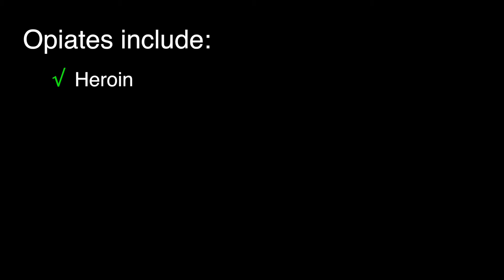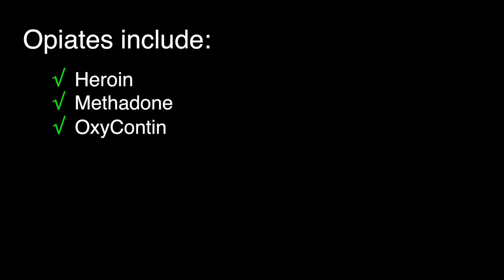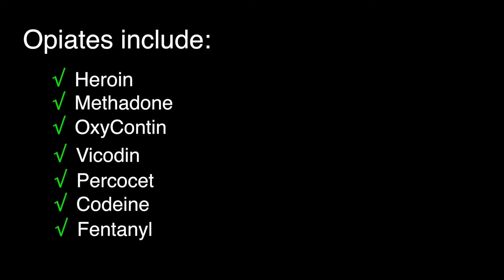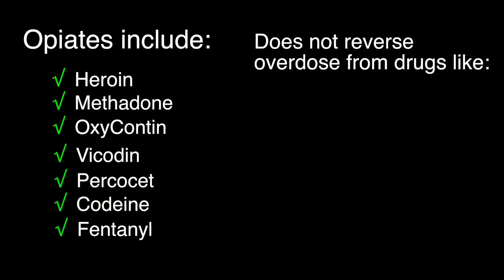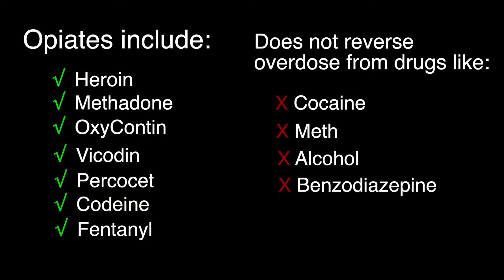Opiates include drugs like heroin, methadone, OxyContin, Vicodin, Percocet, codeine, and fentanyl. Naloxone does not reverse overdose from drugs like cocaine, meth, alcohol, or benzodiazepines like Xanax or Valium.